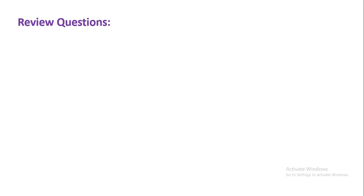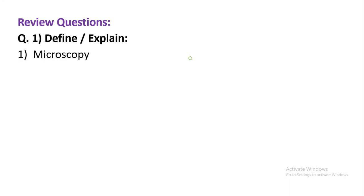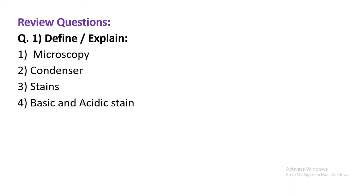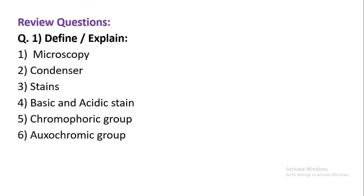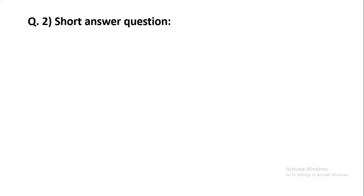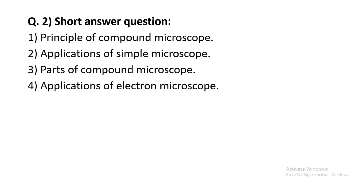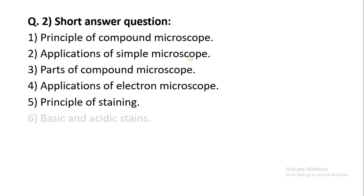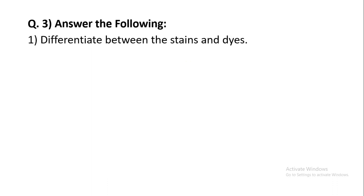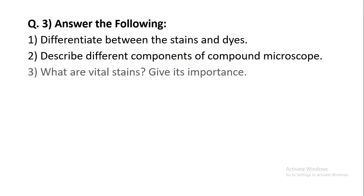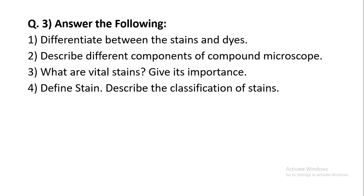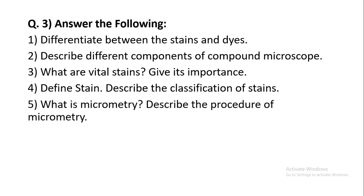So in this way, we study micrometry. This chapter has some questions. Like — what is microscopy, define and explain condenser, stains, basic and acid stain, chromophoric group, oxochromic group, micrometry, stage micrometer. Some short answers are also asked, like principle of compound microscope, applications of simple microscope, parts of compound microscope, applications of electron microscope, principle of staining, basic and acid stains. Long answers include: differentiate between stains and dyes, describe different components of compound microscope, what are the vital stains and give their importance, define stain and describe the classification of stains, what is micrometer, describe the procedure of micrometry. All these questions are asked in this chapter.